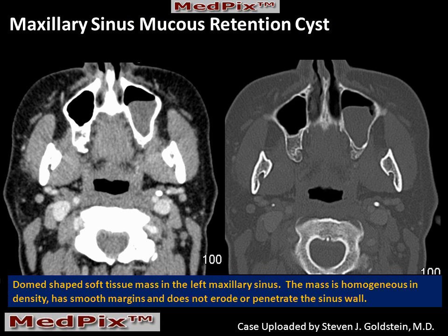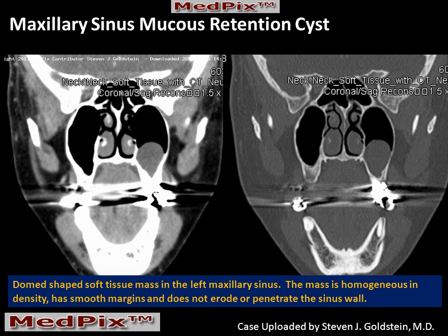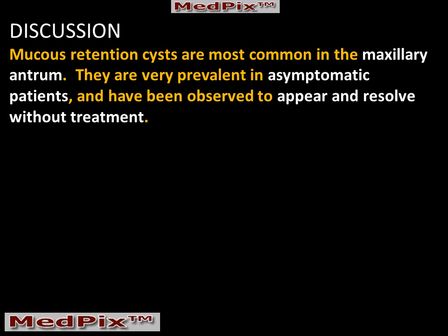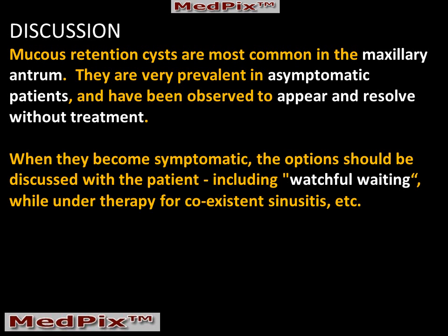As an example, here is an asymptomatic maxillary sinus mucous retention cyst. We can see that the lesion is relatively homogeneous and water-like in its attenuation, and the sinus cavity is not remodeled and retains its normal shape. In the coronal image including bone windows, we can see the classic dome-shaped appearance of the upper margin of the mucous retention cyst, and there is no bony remodeling. Mucous retention cysts are most common in the maxillary antrum, very prevalent, and have been observed to appear and resolve without therapy. When they do become symptomatic, the options should include watchful waiting as well as treatment for the underlying sinusitis.